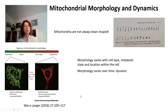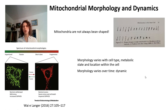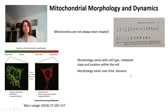The morphologies of mitochondria vary with cell type, with metabolic state, and with location within cells. There are mitochondria that are going to be more elongated in part of the cell and more fragmented in another part of the cell. They also vary over time. So mitochondrial morphology is dynamic.